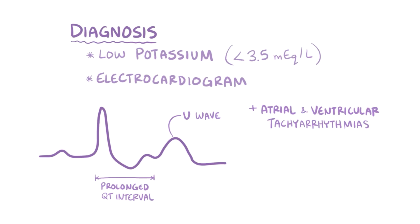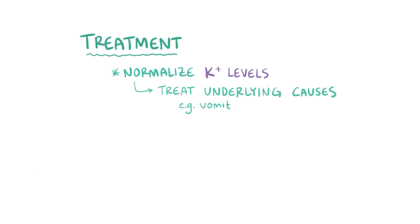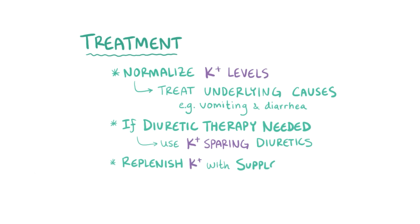In patients with severe hypokalemia, the main goal of treatment is to normalize potassium levels. This is done by reducing ongoing potassium losses by treating underlying causes, like vomiting and diarrhea, and using potassium-sparing diuretics if diuretic therapy is required, as well as replenishing potassium stores with supplementation.